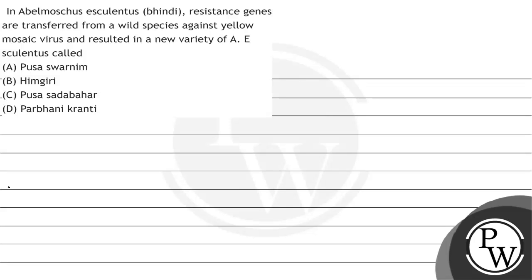Let's see this question. The question says: in Abelmoscus esculentus (bhindi), resistant genes are transferred from a wild species against yellow mosaic virus, resulting in a new variety of Abelmoscus esculentus. Option A: Pousaswarnim.